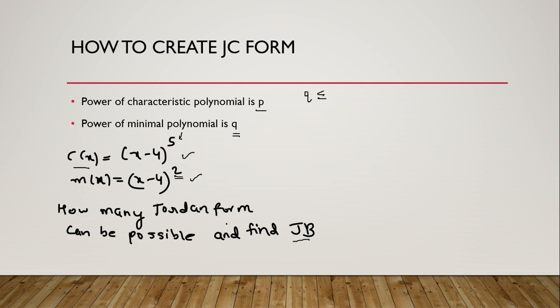Remember that q is always less than or equal to p. For example, this is 5 and this is 2, because the minimal polynomial is derived from the characteristic polynomial, so its value will always be lesser. Now to find Jordan blocks, first find out the possible Jordan blocks.